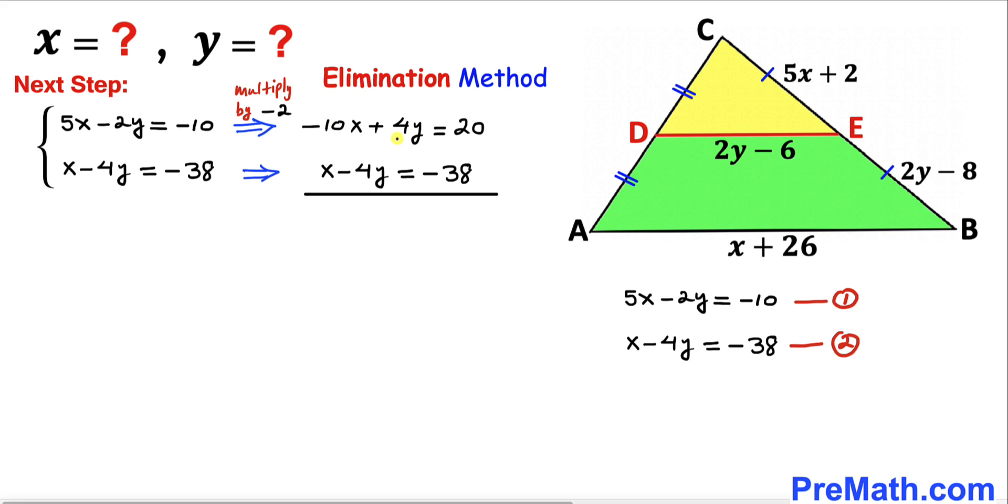Now let's add these two equations. We can see this positive 4y and negative 4y cancel out. On the left-hand side, we get negative 9x equals negative 18.